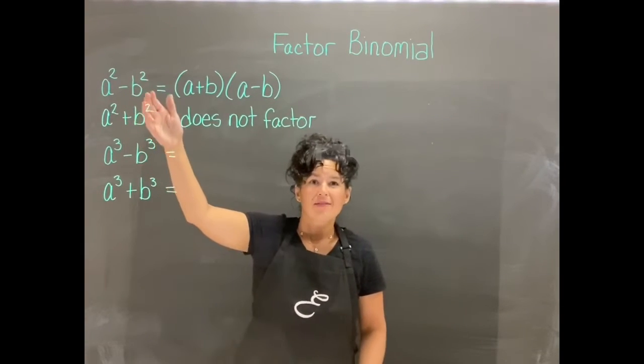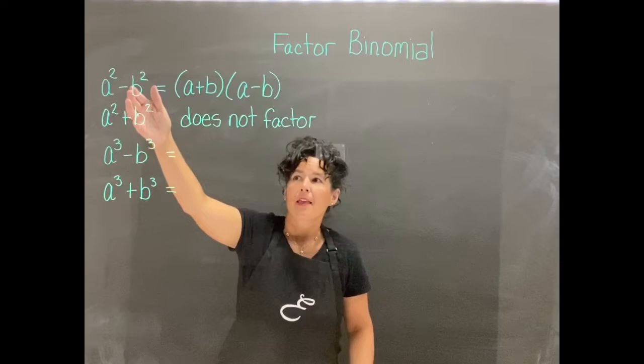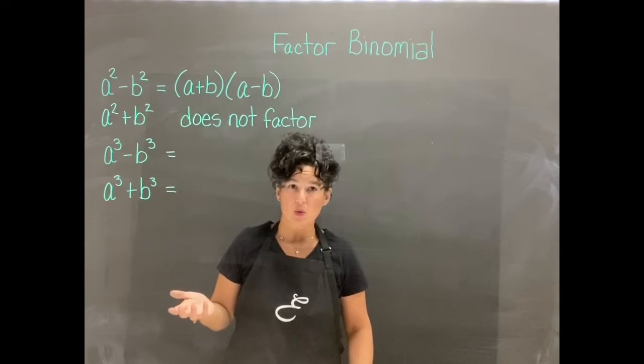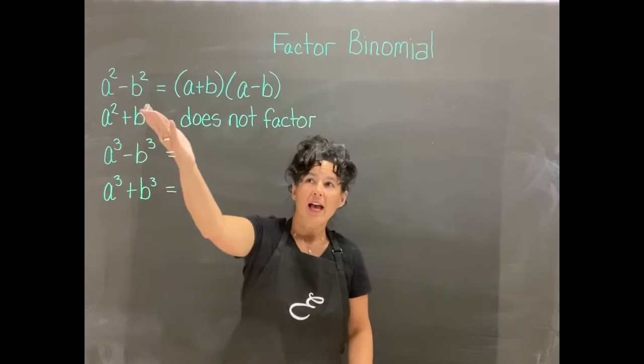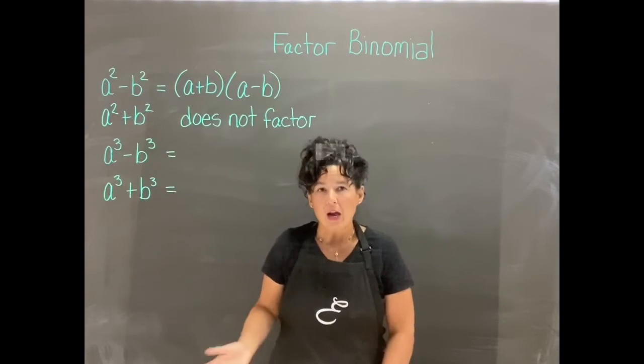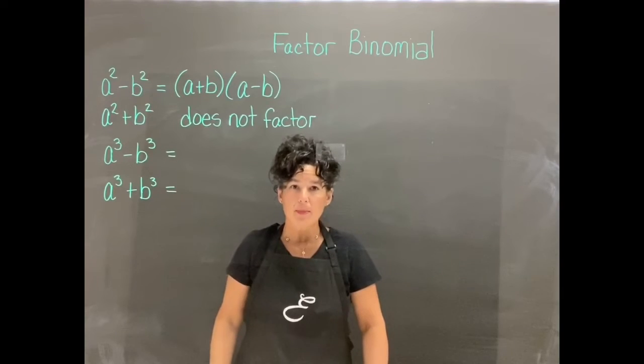The two that are the easiest, I would say, a squared minus b squared. That's called the difference of squares. And that equals a plus b times a minus b. That one is relatively easy to remember.